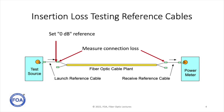The communications system has a transmitter connected through a patch cord into the cable plant, and on the far end a receiver also connected with a patch cord. In insertion loss testing, we use a test source with a launch reference cable and a power meter with a receive reference cable. For insertion loss testing, we need two reference cables, and they are typically one to three meters long.